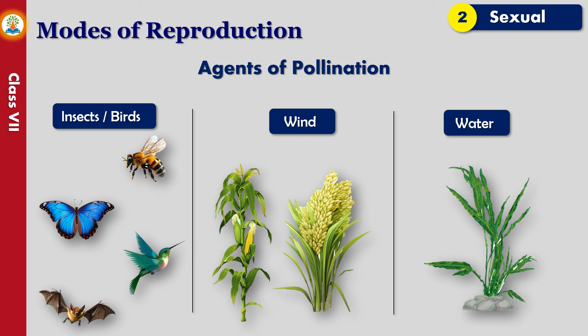Plants such as maize and wheat show wind pollination. Valisneria is an aquatic plant that uses water as the pollinating agent. The flowers in these plants release their pollen grains into the water, which are carried to the female flowers through water currents.